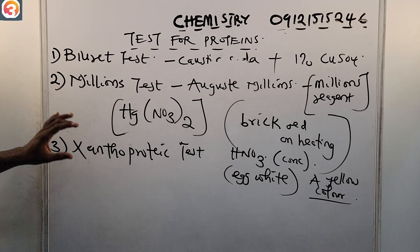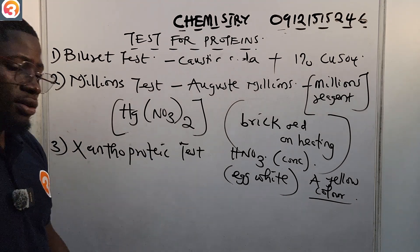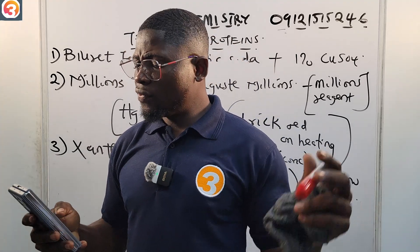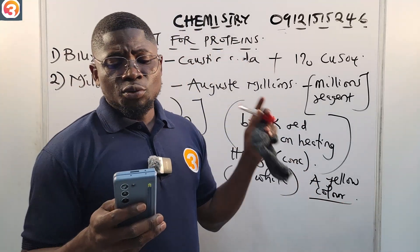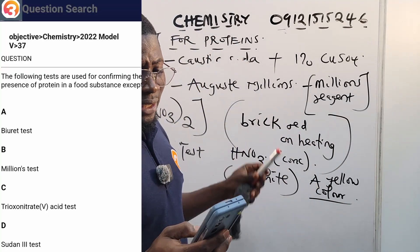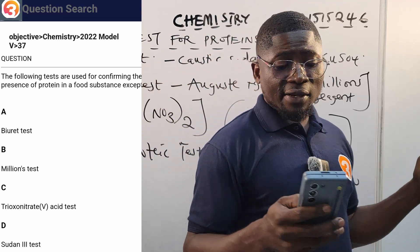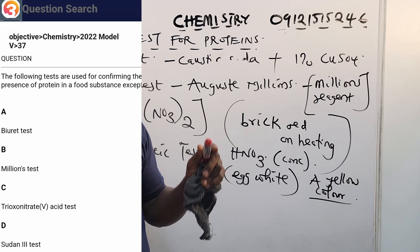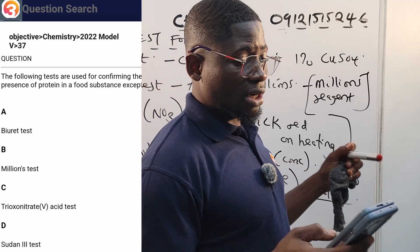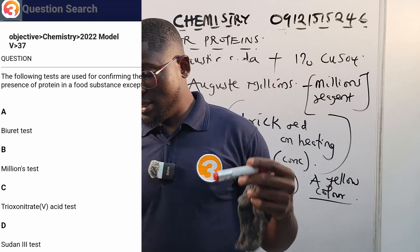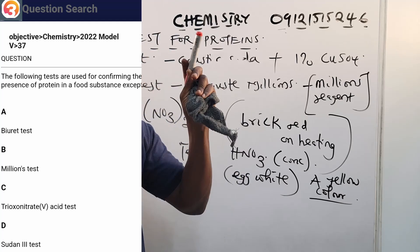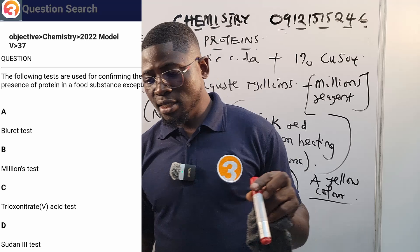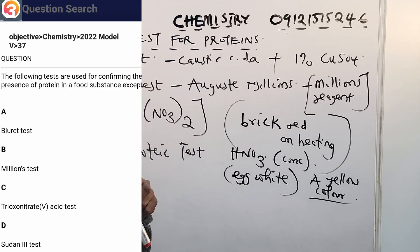So let us go to the OTRSchools JAMB app and answer the question we saw from the app. They said 2022 number 37, the following tests are used for confirming the presence of protein in a food substance except. A says Biuret test, B says Millon's test, C says xanthoproteic test, D says Sudan 3 test, except. So that's saying that three are correct but one is not. And of course we didn't talk about anything like Sudan 3 test.